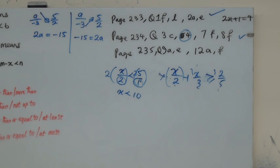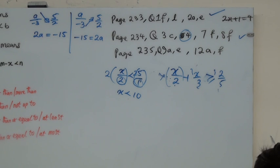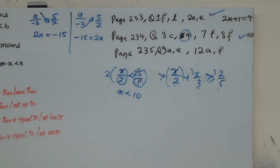The next one is 9A: 2n plus 3 less than 12. What did you get? n less than 4.5. So what is the largest integer value? 4, because n has to be an integer — a whole number with no decimal.